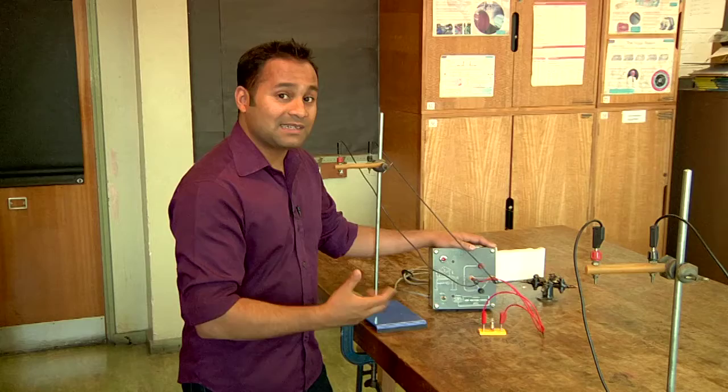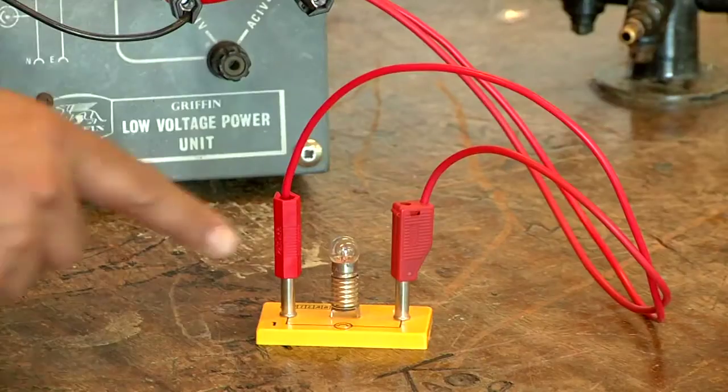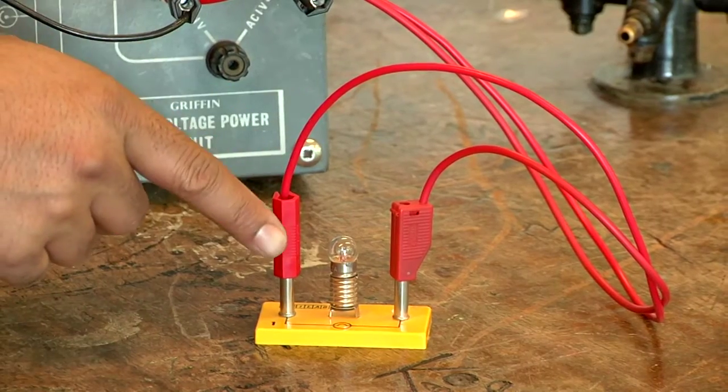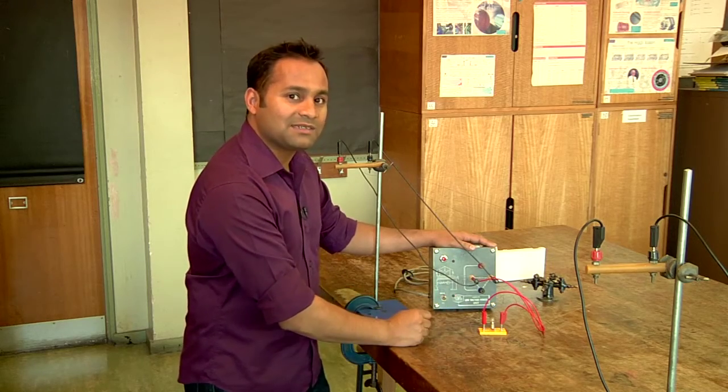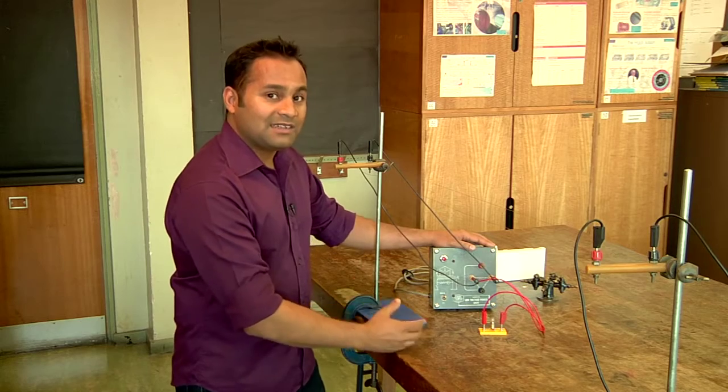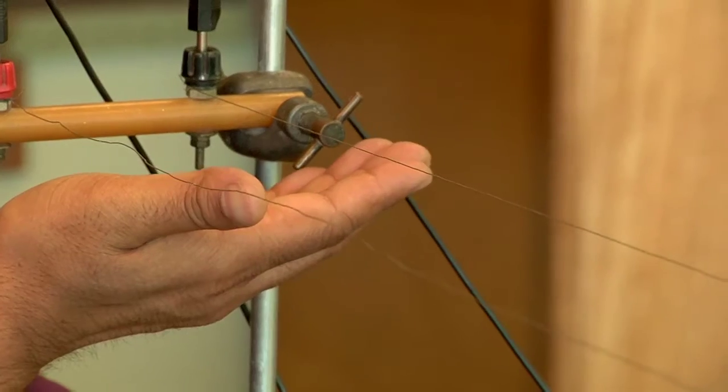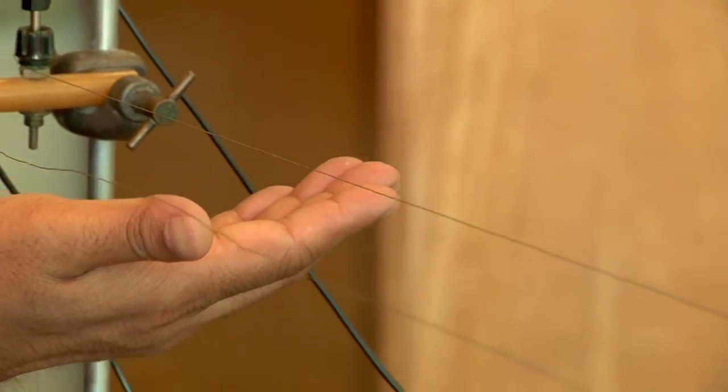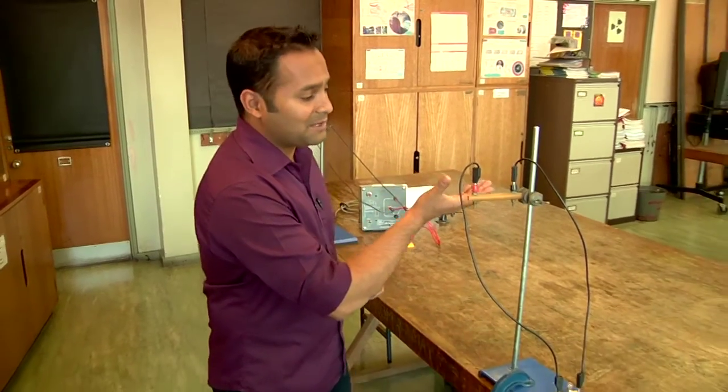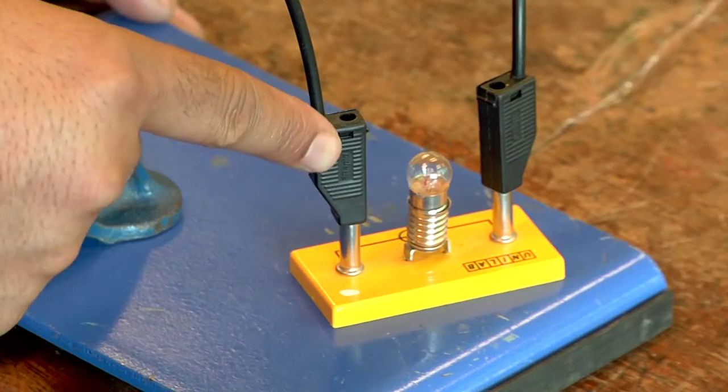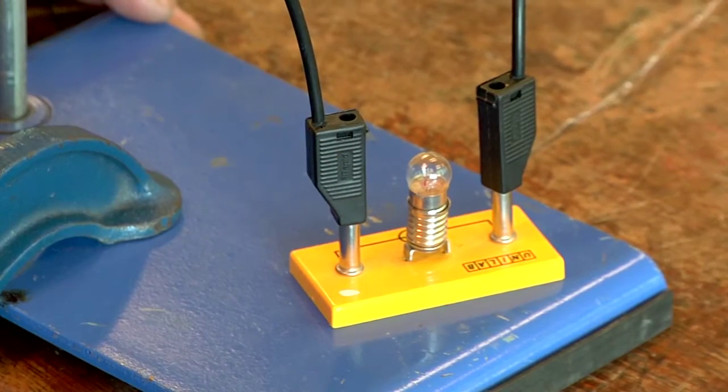I'm using it to represent a power station. I've connected a bulb to it here which represents a home close to the power station. And then I've connected an identical bulb through this circuit using these nichrome wires to represent the power cables, where the bulb represents a second home far from the power station.